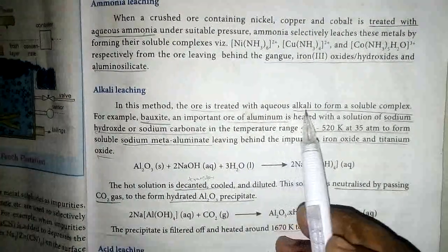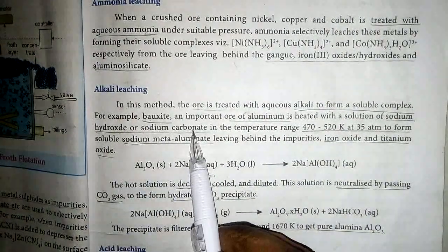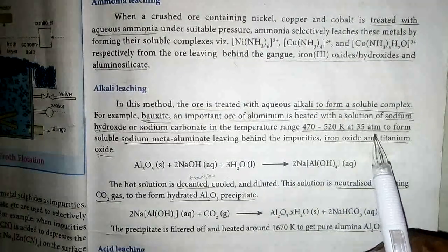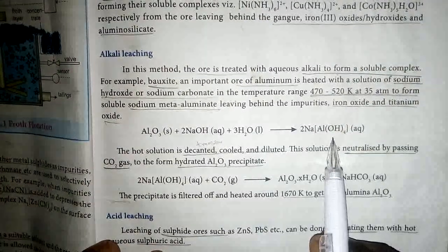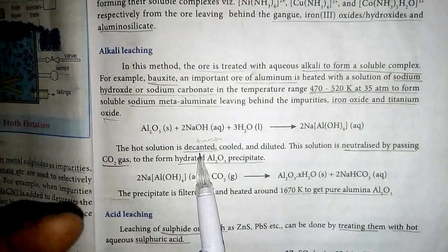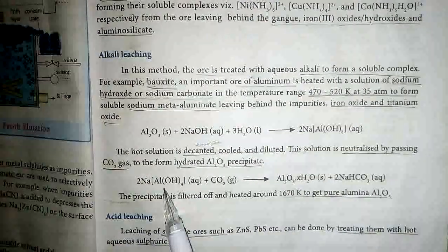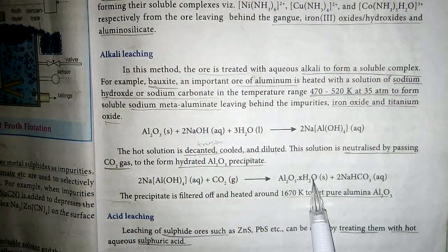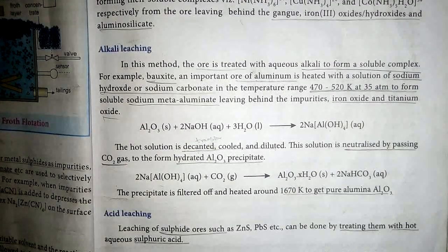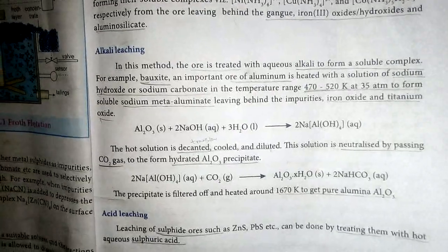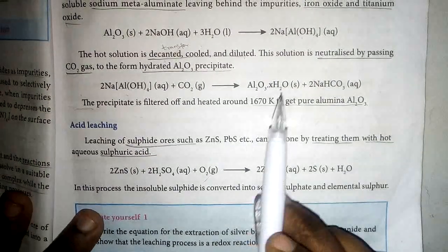Alkali leaching: a base ore is treated with aqueous alkali to form a soluble complex. For example, bauxite (aluminium ore) is heated with a solution of sodium hydroxide or sodium carbonate at 470–520 K and 35 atmospheres to form soluble sodium meta-aluminate. The solution is decanted, cooled, diluted, and neutralized by passing carbon dioxide. Based on pH below 7, the precipitation is filtered off and heated around 1070 K to get pure alumina.